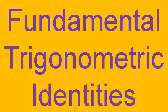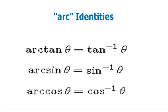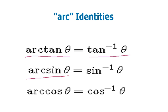The first identity I am going to take — you know very well — the reciprocal identities. Tan theta is always equal to the inverse of cot theta. Sin theta is equal to the inverse of cosec theta. Cos theta is equal to the inverse of sec theta.